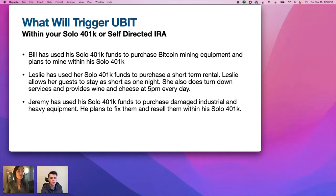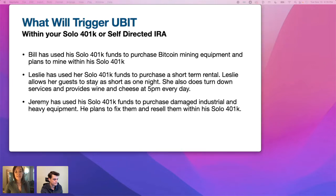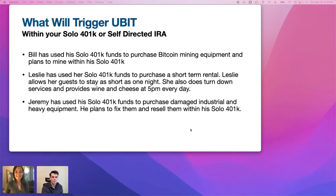Leslie used her Solo 401k funds to purchase a short-term rental, allows guests to stay as short as one night, and provides turndown services and wine and cheese at 5pm every day — that's almost like running a hotel, which qualifies as an active business. To avoid this: no turndown, no concierge services, and require a minimum number of nights to book. Jeremy purchases damaged industrial equipment, fixes it, and resells it — he's acting as a dealer, buying and reselling an asset — that is a no-no.